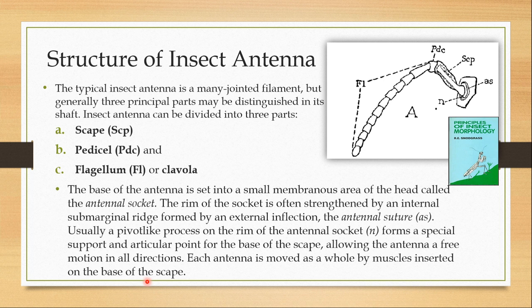Now in the second unit we are going to talk about the structure of insect antennae. The typical insect antenna is a many-jointed filament. Generally there are three principal parts that can be distinguished in its shaft: the first part is the scape, the second part is the pedicel, and the final part is known as the flagellum or clavola.